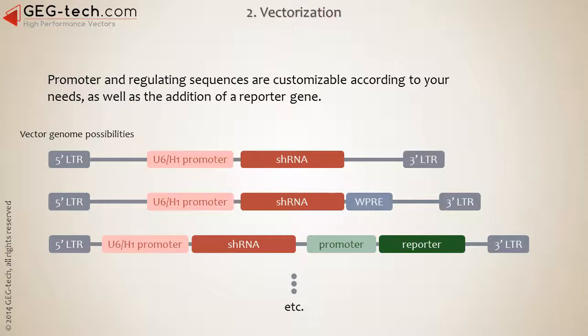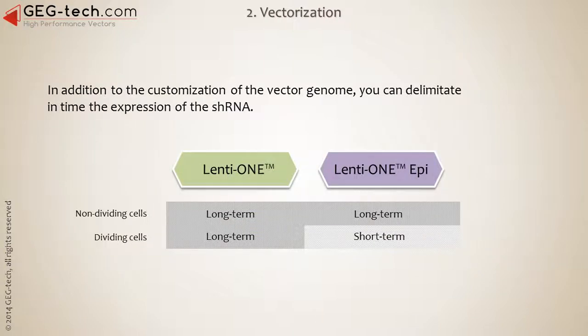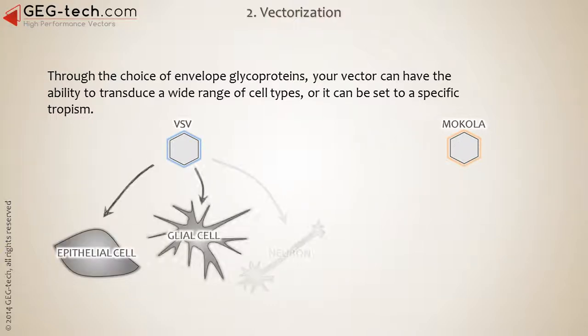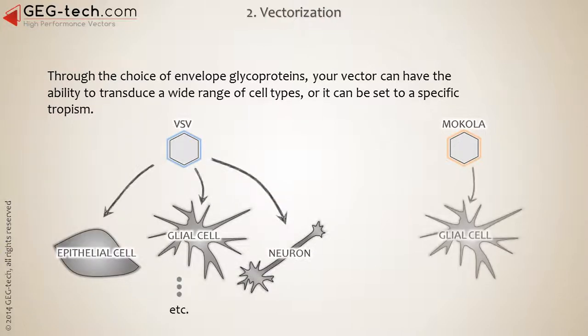In addition to the customization of the vector genome, you can delimit in time the expression of the shRNA by making it short-term in dividing cells. Through the choice of envelope glycoproteins, your vector can have the ability to transduce a wide range of cell types, or it can be set to a specific tropism.